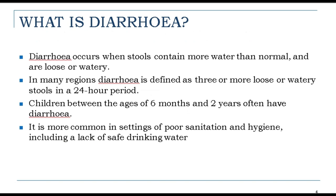What is diarrhea? Diarrhea occurs when stools contain more water than normal and are loose or watery. In many regions, diarrhea is defined as three or more loose or watery stools in a 24-hour period. Children between the ages of six months and two years often have diarrhea. It is more common in settings of poor sanitation and hygiene, including lack of safe drinking water.